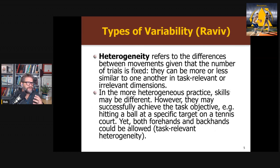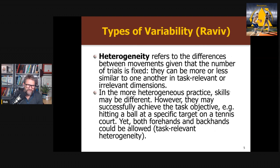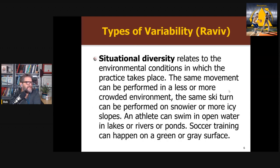Heterogeneity refers to how similar the movements are for the different variants. In more heterogeneous practice, you have to perform more different movements. For example, if you're allowing both forehands and backhands to make a shot, that's more heterogeneous than doing only forehands — we're varying the difference between movements, not just the number of conditions. Situational diversity relates to the environmental conditions in which practice takes place, such as crowded, snowy, icy, or open water swimming contexts.